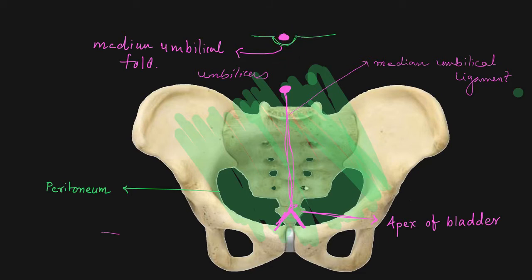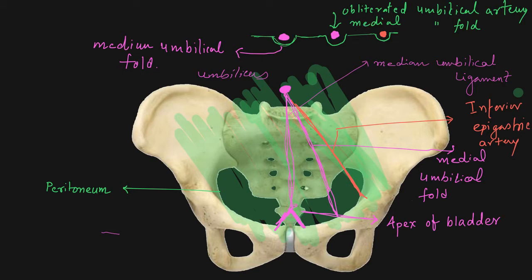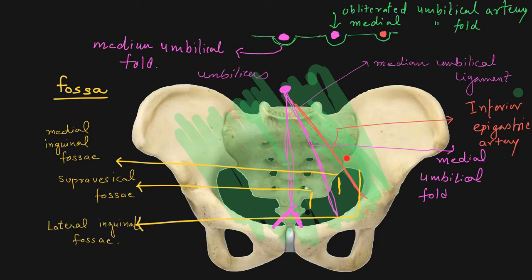Lateral to that there is another fold, the medial umbilical fold, and this medial umbilical fold is because of the obliterated umbilical artery. Still lateral to that there is the inferior epigastric artery, which gives you the lateral umbilical fold. Because of these three folds there is formation of fossae: the supravesical fossa, medial inguinal fossa, and lateral inguinal fossa.